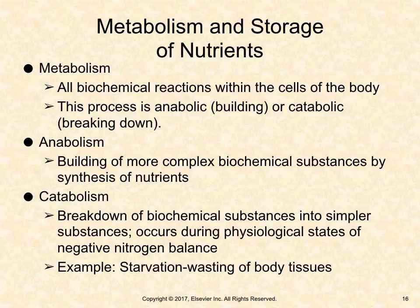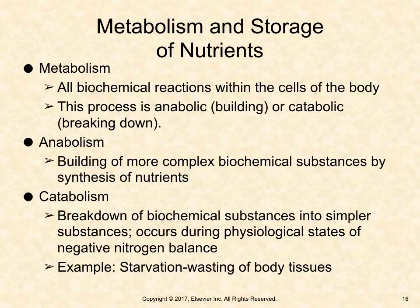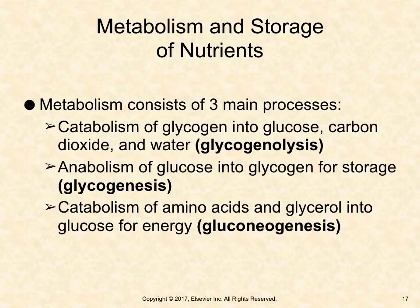Metabolism encompasses all biochemical reactions within the cells of the body. This process is anabolic (building) or catabolic (breaking down). Anabolism is the building of more complex biochemical substances by synthesis of nutrients. Catabolism is the breakdown of biochemical substances into simpler substances, occurring during physiological states of negative nitrogen balance. Starvation is an example of catabolism when wasting of body tissues occurs. Metabolism consists of three main processes: glycogenolysis (catabolism of glycogen into glucose, carbon dioxide, and water), glycogenesis (anabolism of glucose into glycogen for storage), and gluconeogenesis (catabolism of amino acids and glycerol into glucose for energy).